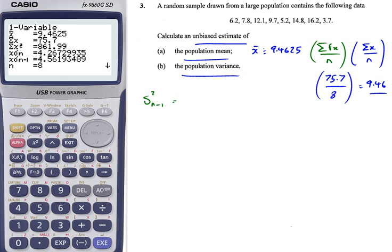And that figure is calculated as the sum of fx squared divided by n minus 1, minus n all over n minus 1, lots of x bar squared.